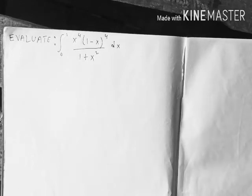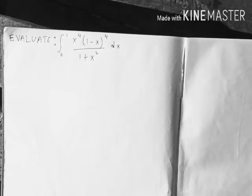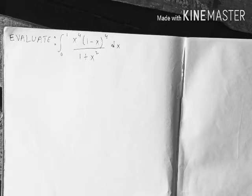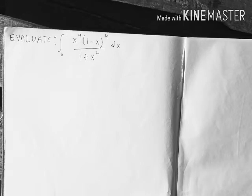Hello friends, today we are going to evaluate this integral — the integral from 0 to 1 of x to the 4, times (1 minus x) to the 4, divided by (1 plus x squared), dx. This is really amazing. This integral will prove something, and it was first published in 1944 in the pages of the Journal of the London Mathematical Society.